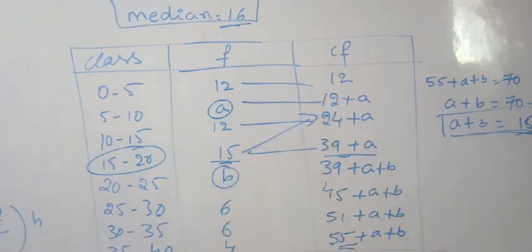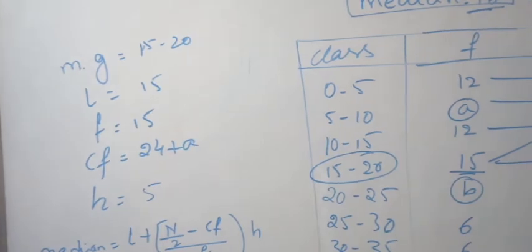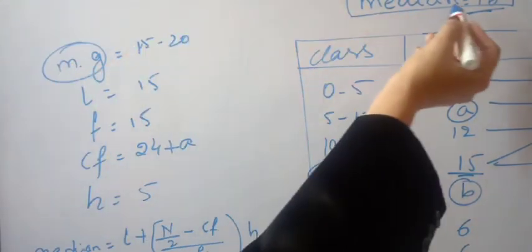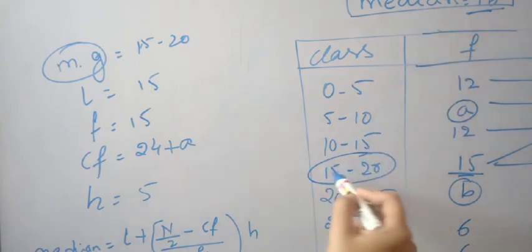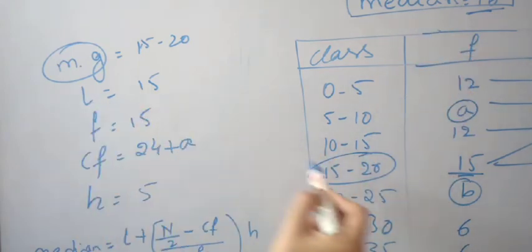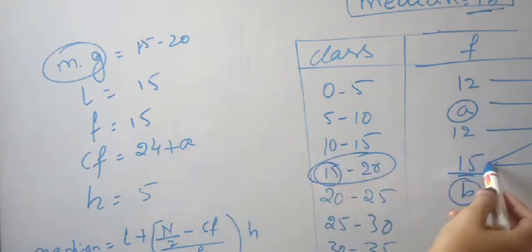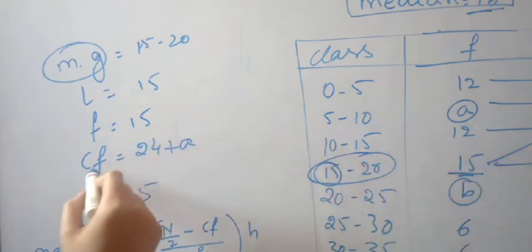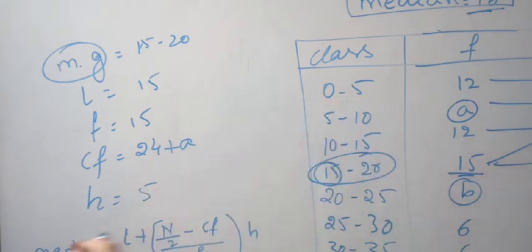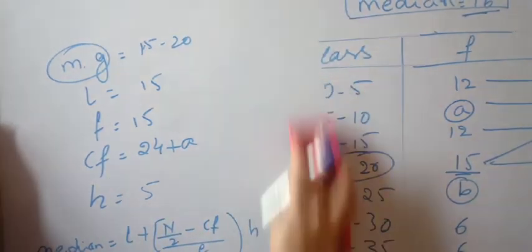We consider the 15-20 group because the median 16 falls in this interval. L equals 15, frequency f equals 15, cf is 24+A. The height h is the class interval difference, which is 5. Now we substitute in the median formula.